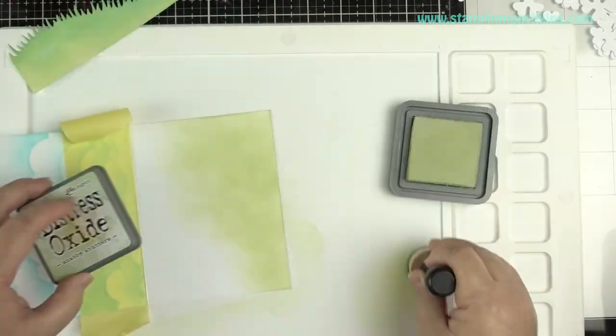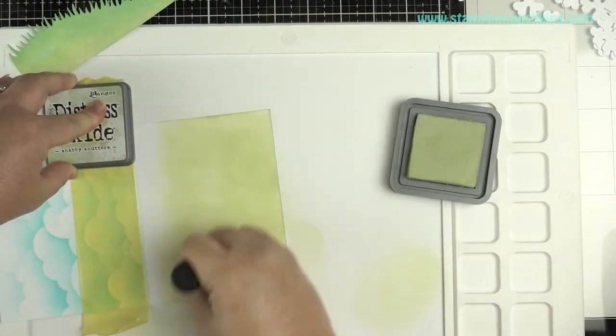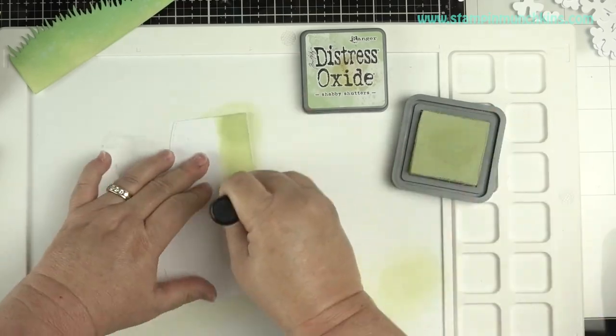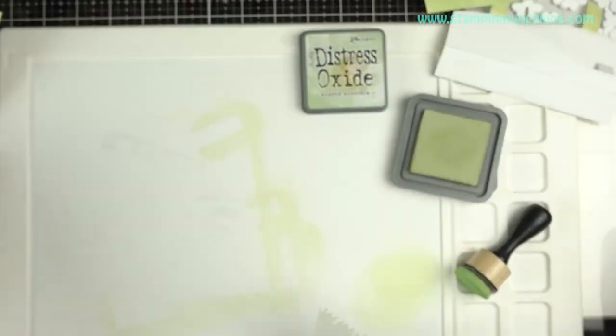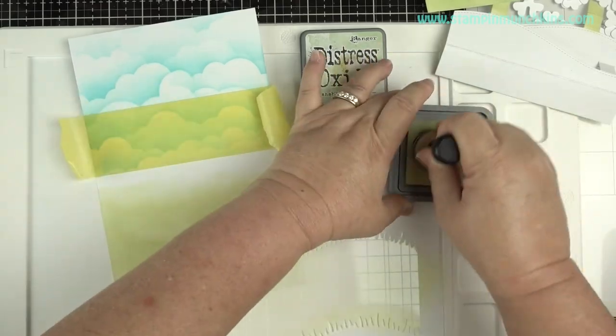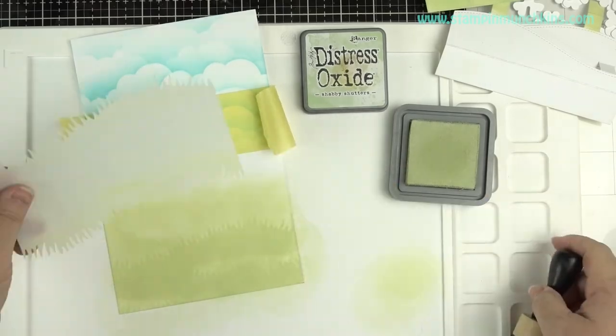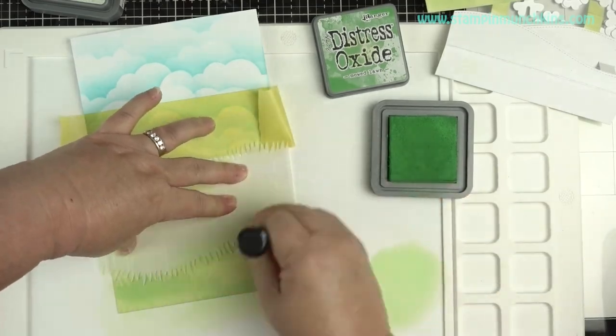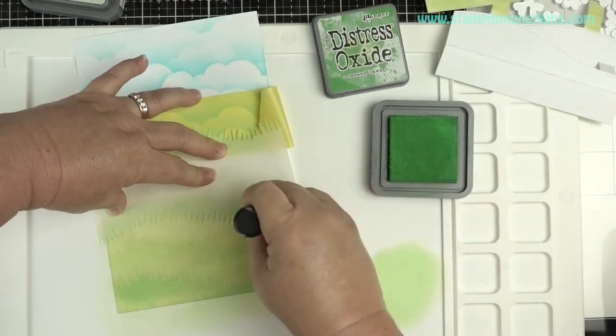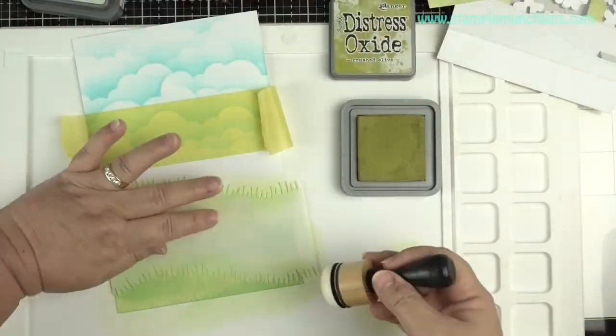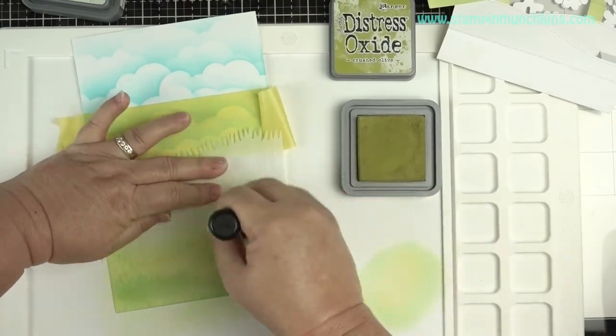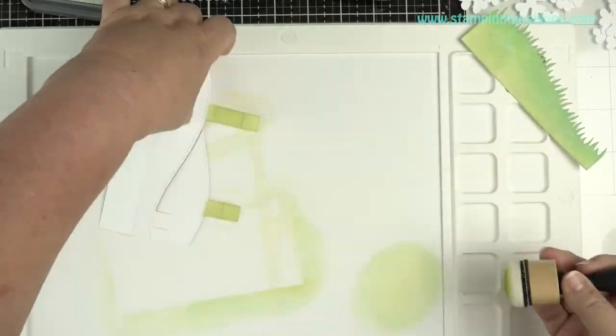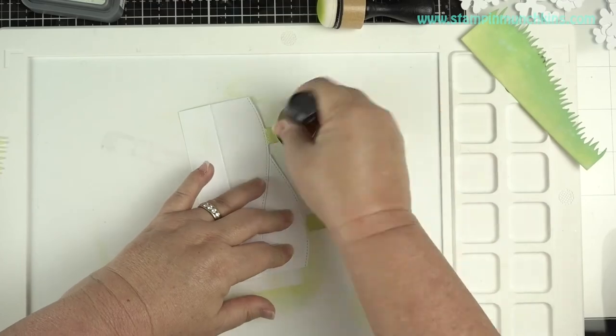Now I'm going with the Shabby Shutters to put the foundation down. I don't have to go all the way up because that hillside pop-up stencil will cover the top portion. Now I'm going back with the grass stencil and just adding some grass blades to the hill. I'm using the hillside grassy stencils and I flip it back and forth - you can get a lot of different looks. I'm doing that with all three colors of the oxides.